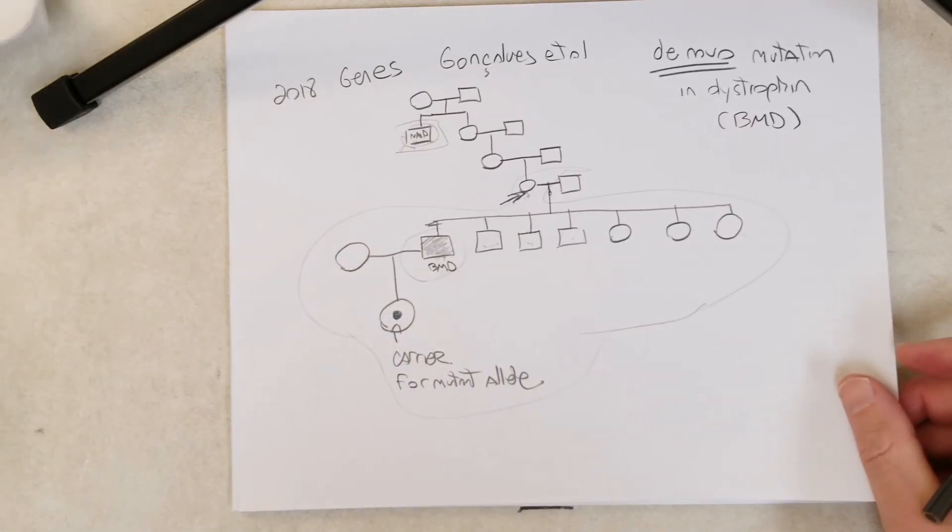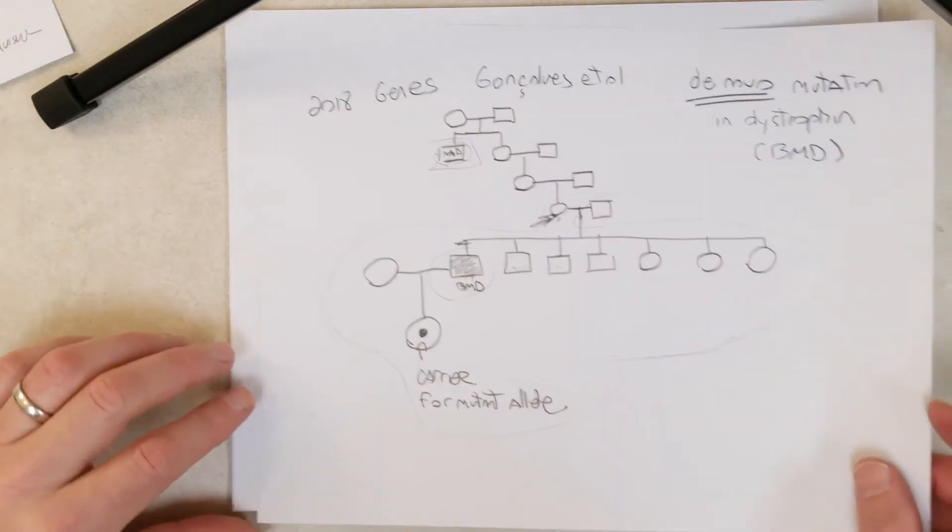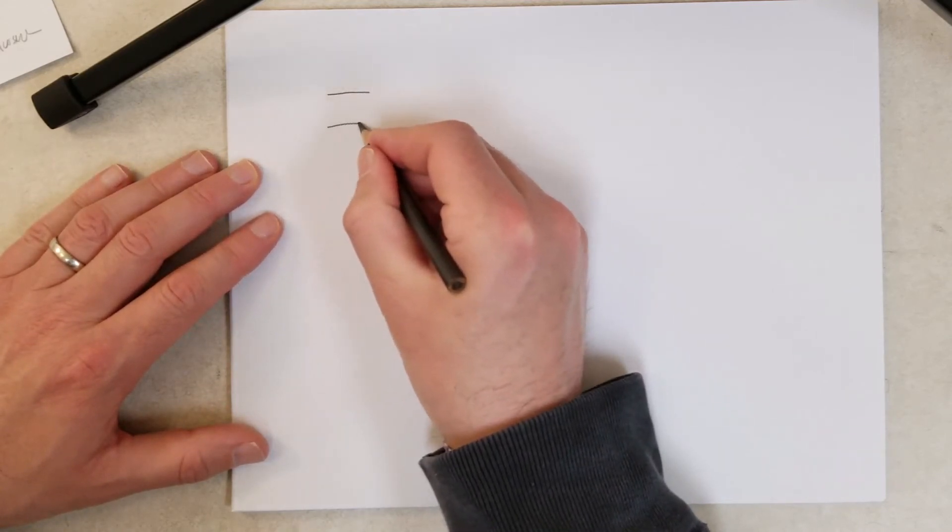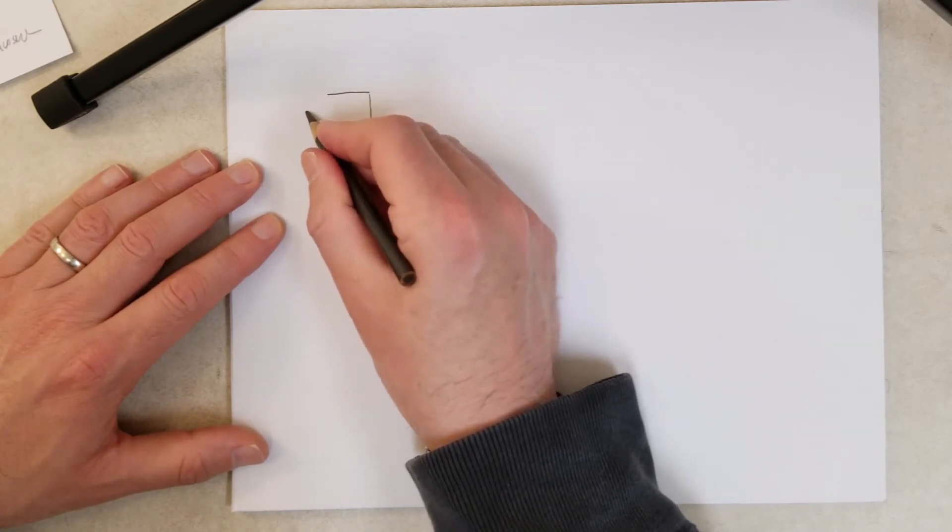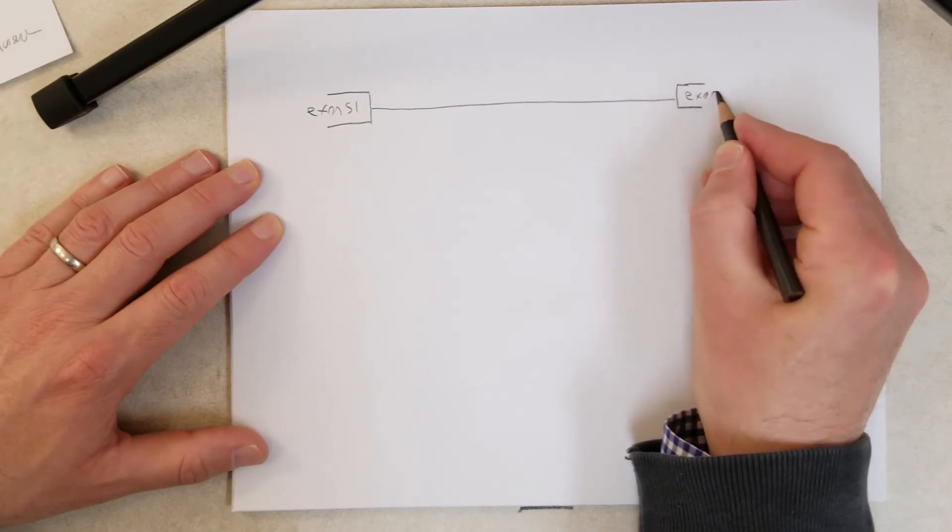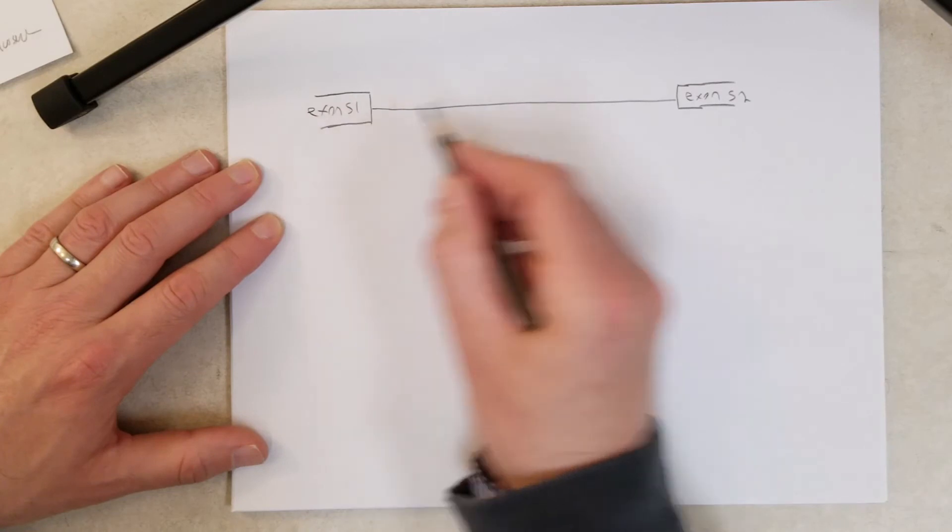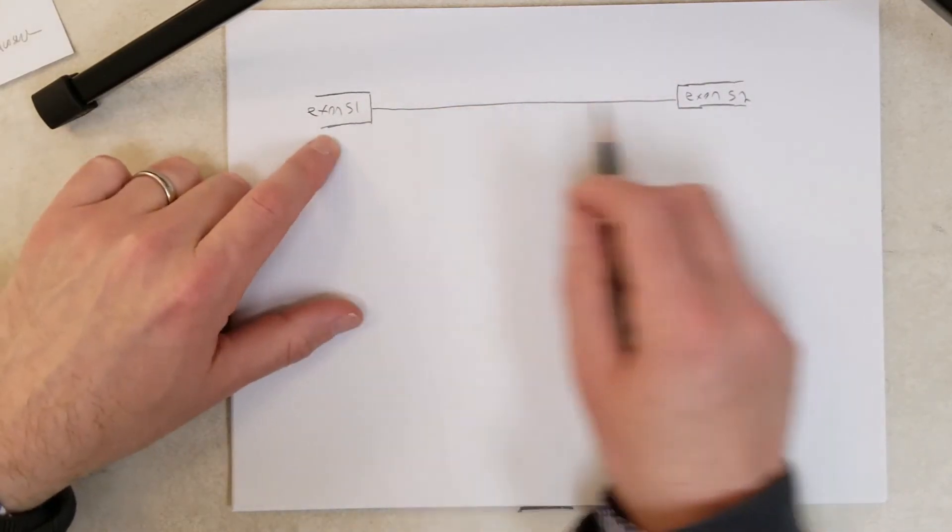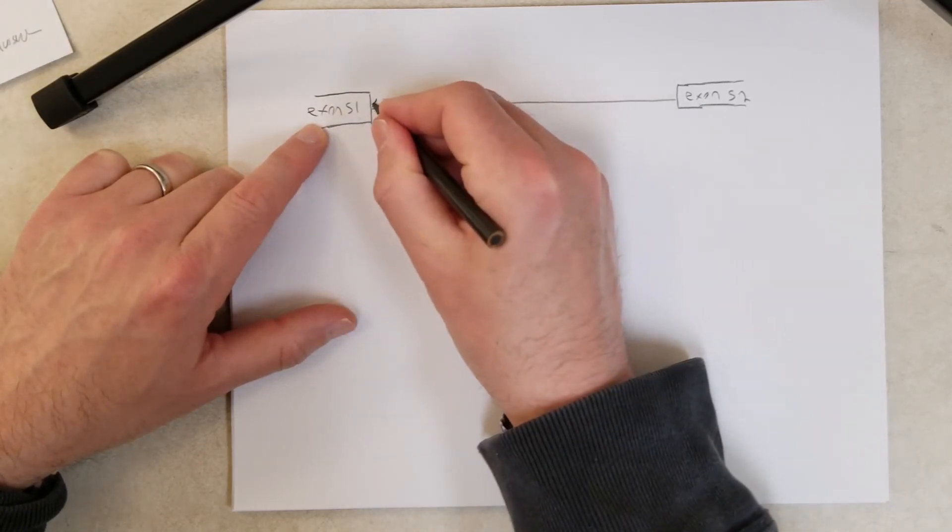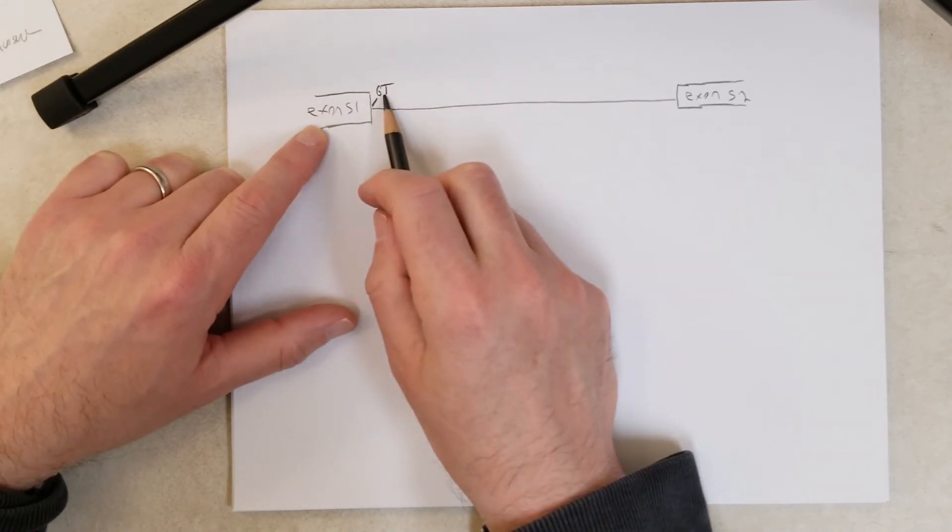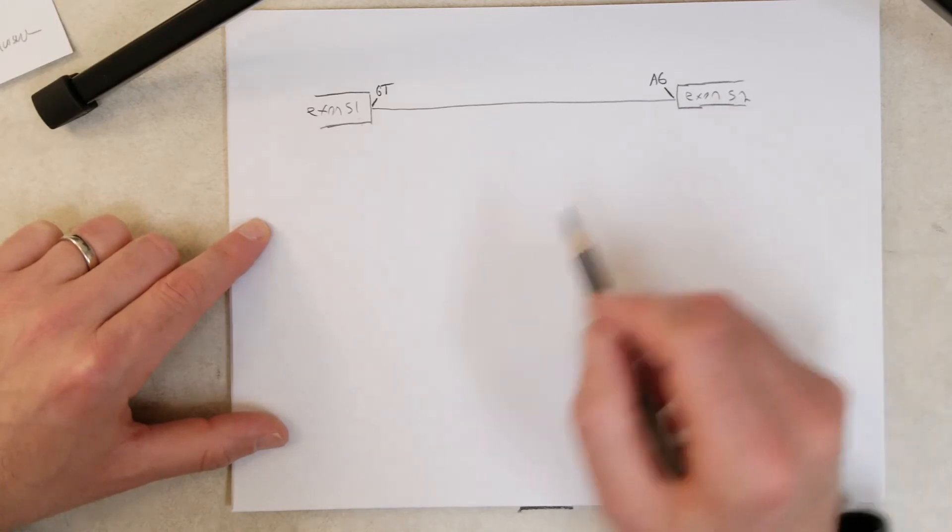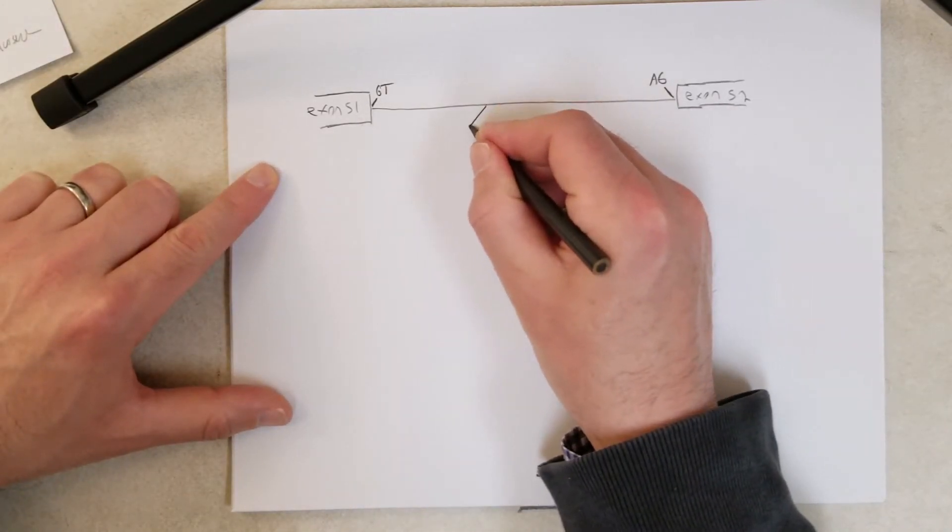So what happened? This is an L1 insertion event. The L1 element, the line element, the L1 element moved to a new location in the genome and where it landed was the dystrophin gene. Specifically, there are 79 exons in the dystrophin gene. It landed between exon 51 and exon 52. We talked about exons and introns earlier in the course. I'm just diagramming that part of the gene. This is a DNA sequence. This little rectangle right here is the end of exon 51. The beginning of the intron starts with a GT, right? This is the five prime consensus sequence for an intron. The end of the intron ends with an AG, and then we have the start of exon 52 here.